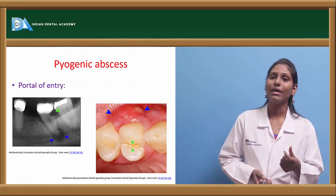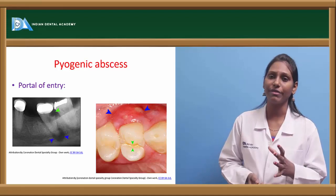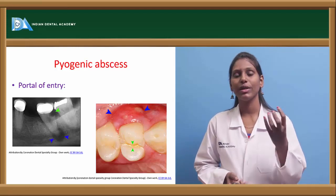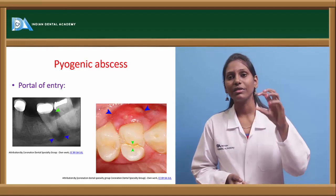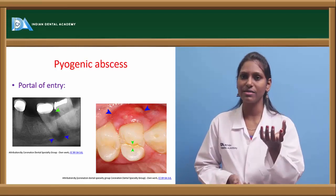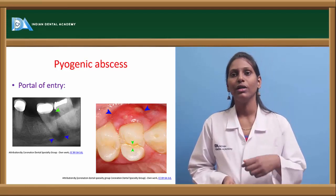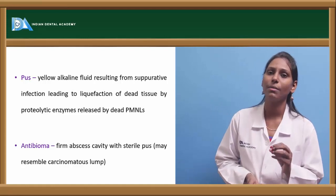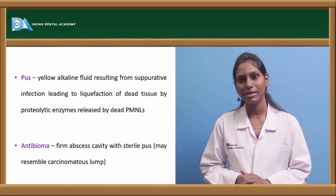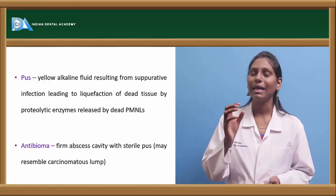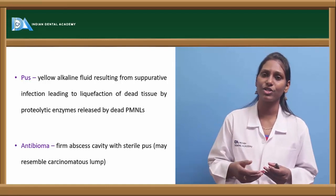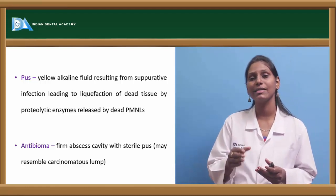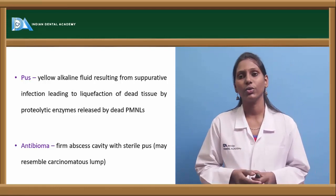A pyogenic abscess is a collection of pus associated with some infection. For example, tooth caries caused by Streptococcus mutans can cause pus collection at the periapical region. Pus is defined as a yellow alkaline fluid resulting from a suppurative infection caused by Streptococcus species, where there is liquefaction of dead tissues by proteolytic enzymes released by polymorphonuclear leukocytes.